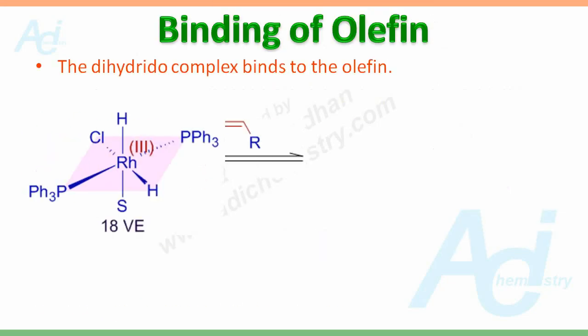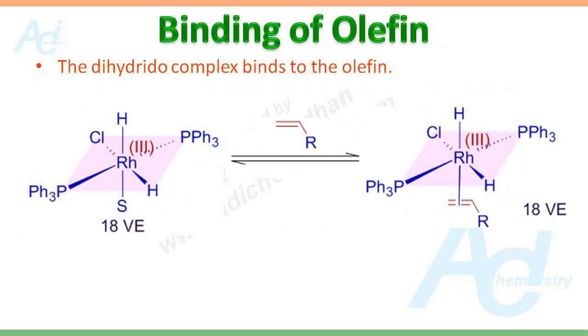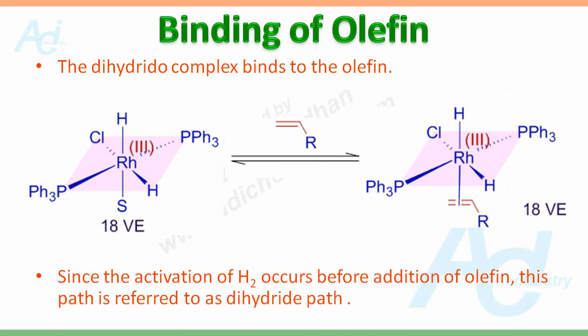Now, a molecule of olefin binds to the complex by replacing a solvent molecule. Since the activation of H₂ occurs before addition of olefin, this path is referred to as the dihydride path.